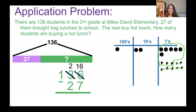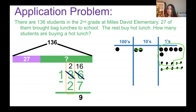I'm left with 9 ones. Now let's subtract the numbers in our tens place. I have 2 take away 2. So I'm taking away those 2 tens. How many do I have left? I have 0 left.